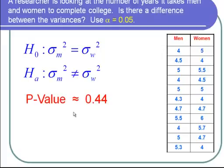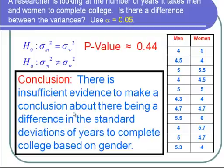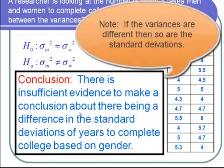So I am ready to state the conclusion. I can conclude that there is insufficient evidence to make a conclusion about there being a difference in the standard deviations of years to complete college based on gender. And I'm done with the problem.